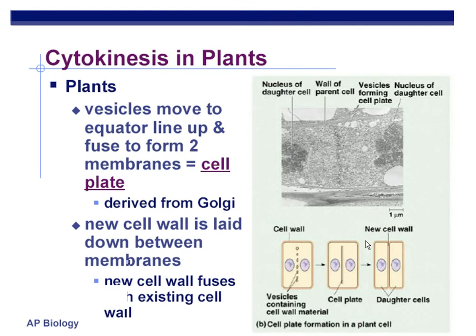In plants, they produce something other than a cleavage furrow called a cell plate. This cell plate eventually becomes the cell wall in plant cell cytokinesis.